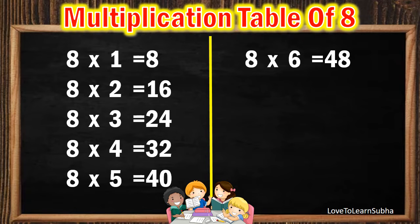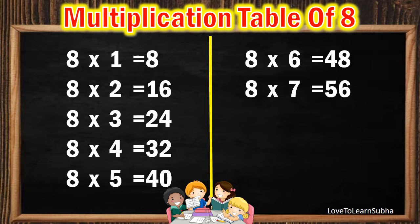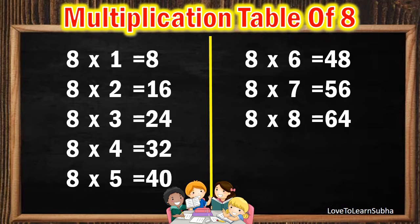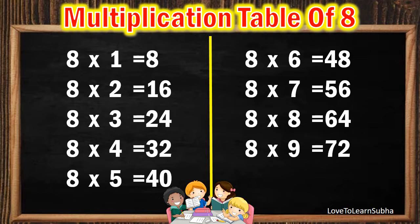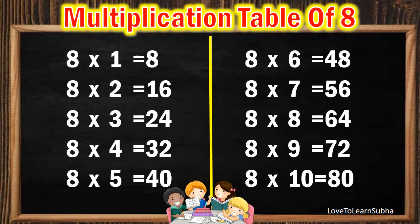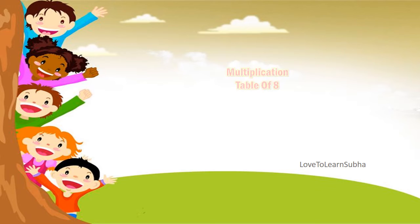8 sixes are 48, 8 sevens are 56, 8 eights are 64, 8 nines are 72, 8 tens are 80.